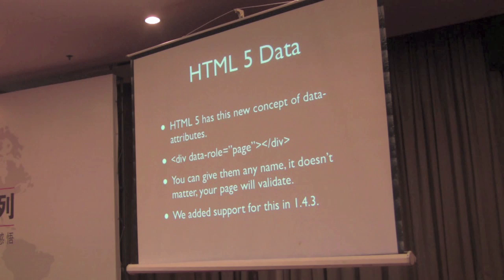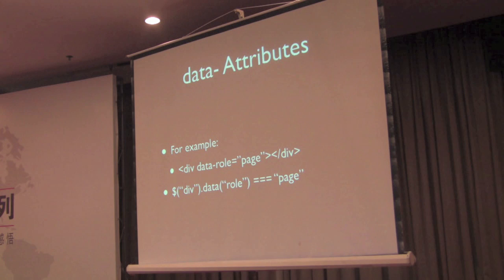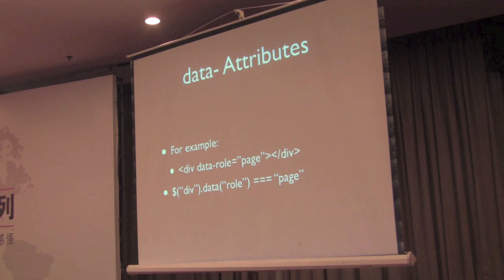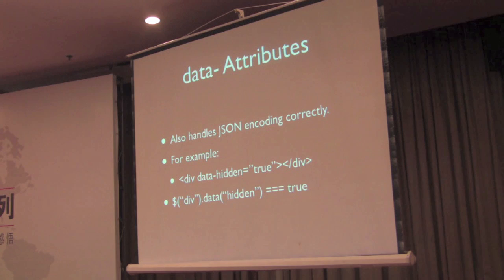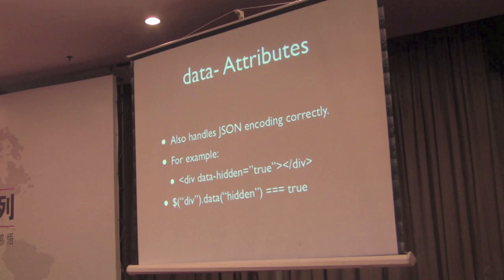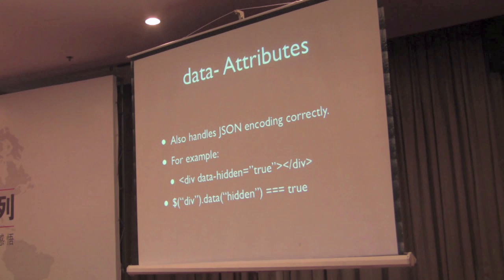In jQuery 1.4.3, we added some explicit support for data attributes. For example, you can see where we have a div in the page with a data role. When you use jQuery and you say .data and ask for the role, it gets it out and integrates it into our data API. We feel this is a nice and simple API for retrieving these attributes. One nice side effect is that we also handle JavaScript objects correctly. For example, we have an attribute named data-hidden with a value of true, and we're able to take that and turn it into a Boolean true value rather than leaving it as a string, which will make your code much simpler.